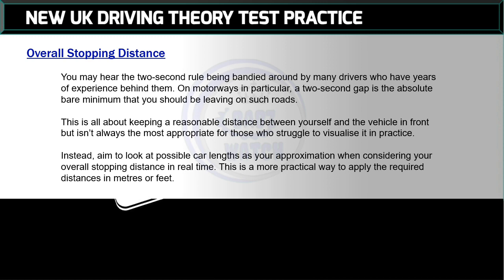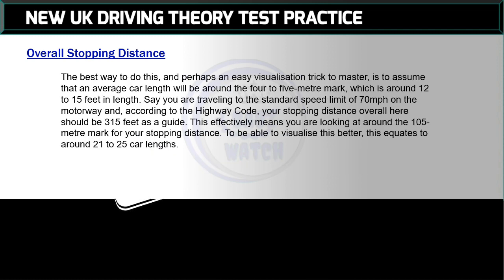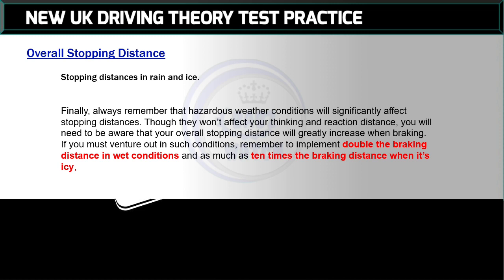Make it possible to use car lengths as your approximation when considering your overall stopping distance in real time. This is a more practical way to apply the required distances in meters or feet. The best way to do this, and perhaps an easy visualization trick to master, is to assume that an average car length will be around the 4–5 meter mark, which is around 12–15 feet in length. Say you are traveling at the standard speed limit of 70 miles per hour on the motorway — according to the highway code, your stopping distance should be 315 feet, which equates to around the 105-meter mark, or around 21–25 car lengths.